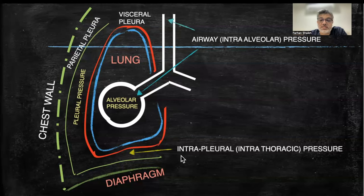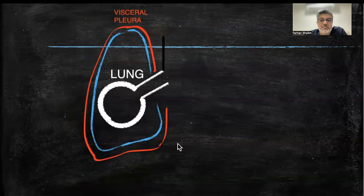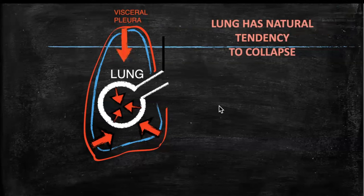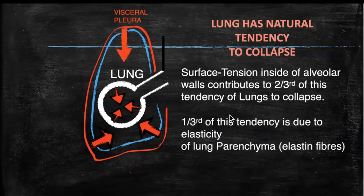This is the intrapleural pressure, which is the pressure between the parietal and the visceral pleura. When a lung is kept outside, it has a natural tendency to collapse on itself. Two-thirds of this tendency is because of the surface tension inside the alveolar walls.